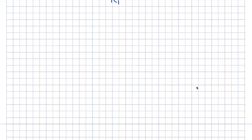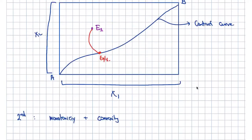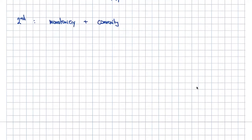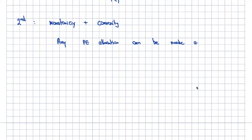The Second Welfare Theorem requires monotonicity plus convexity — and of course no externalities, no frictions in transactions, price-taking behavior, etc. What does the Second Welfare Theorem say? It says that any Pareto efficient allocation can be made an equilibrium.